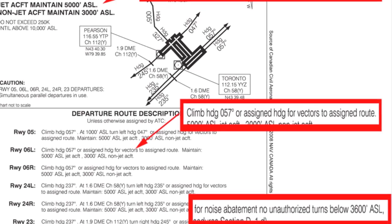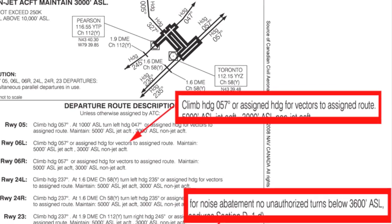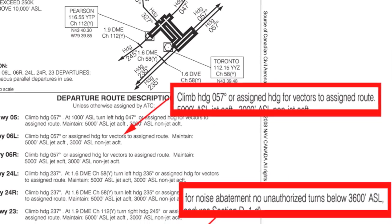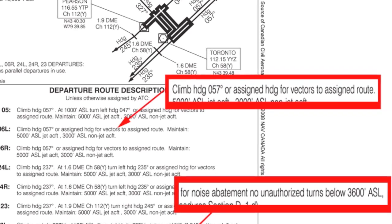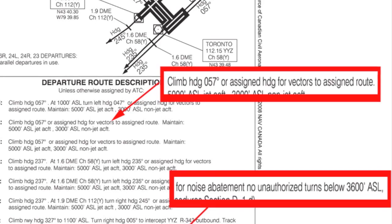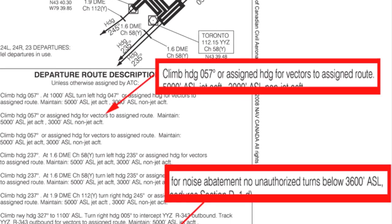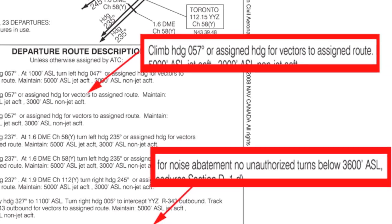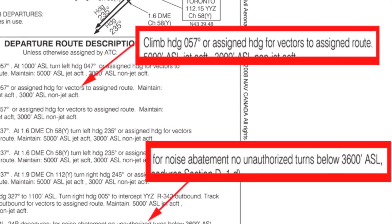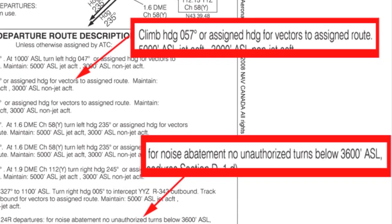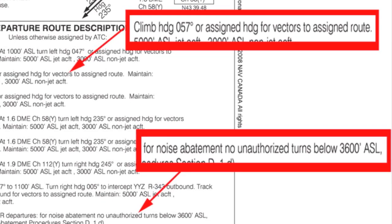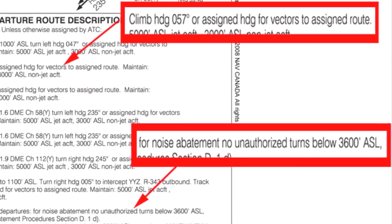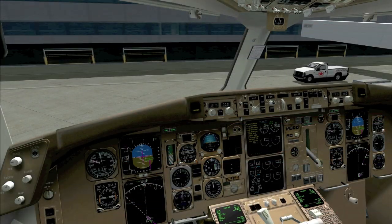Finally, there is a noise abatement restriction in Toronto in that jets may not turn below 3,600 feet. Props are allowed to turn below 3,600 feet and will generally be given an initial departure heading from the tower controller.